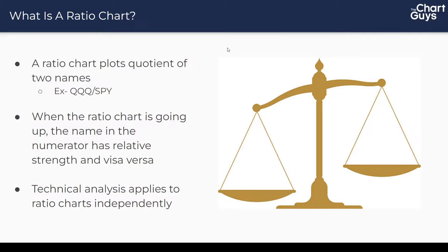What are ratio charts? It's ultimately a chart that plots the quotient of two names. For example, typing in QQQ divided by SPY — it divides all of the QQQ inputs by the SPY inputs for the specific times those inputs printed, then charts that data. When a ratio chart is going up, the name in the numerator has relative strength, and vice versa when it's going down. The craziest thing about ratio charts is that technical analysis applies to them independently — you will see trend changes, support holds, resistance rejections, EMA riders — all the things we see on regular charts.